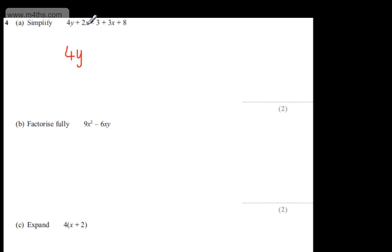If we look at the terms in x, we've got +2x + 3x. That's going to give me +5x. If we look at the numbers or the constants, I have -3 + 8. That's going to give me +5. So that's my final answer: 4y + 5x + 5.